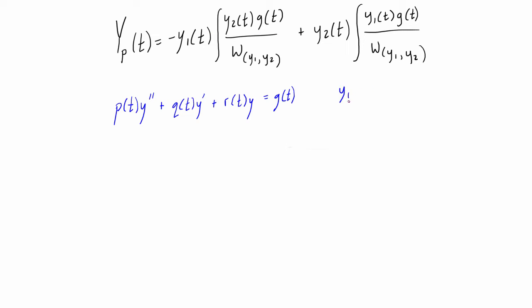You're going to see we have y1, we have y2, we need what would be given g(t), and then we also have w of y1 and y2.